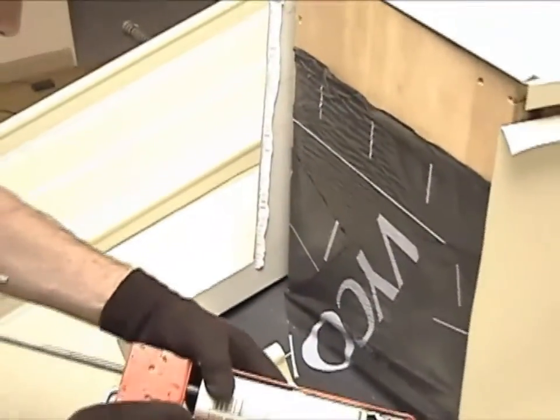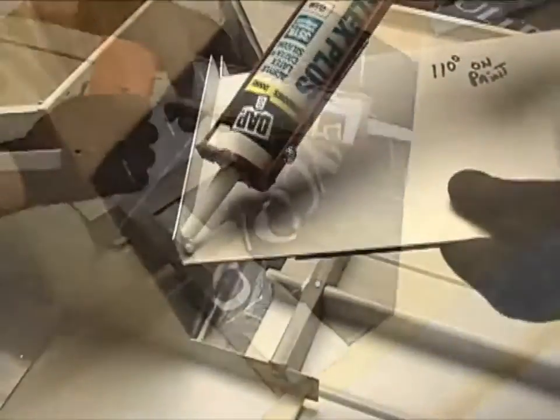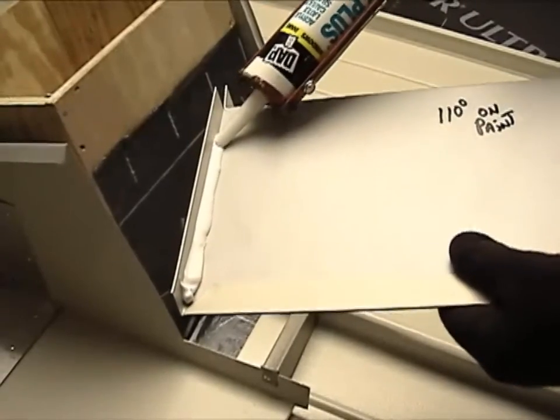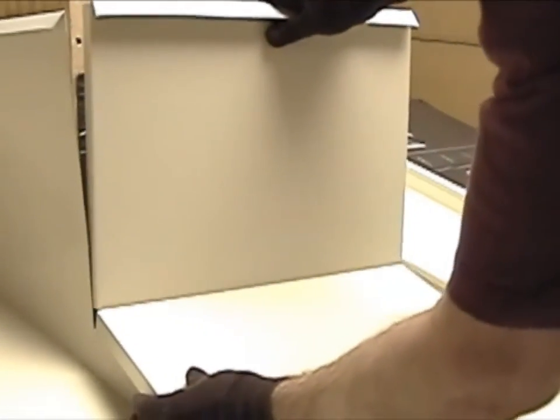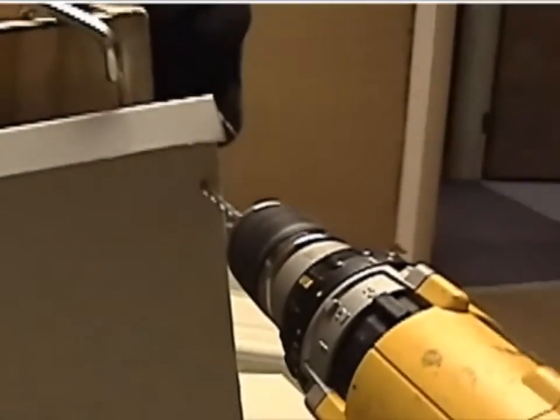The vertical tabs of the apron flashing are tucked inside the curb base. The sloped tabs are installed outside. This method compresses the caulk between for a more snug fit. Rivet at 4 inches on center.